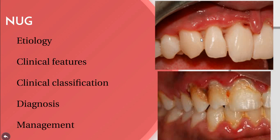The local predisposing factors that make the disease worse include poor oral hygiene, pre-existing marginal gingivitis, faulty dental restorations, and deep periodontal pockets, which offer a favorable environment for the disease. Areas of gingiva traumatized by opposing maloccluded teeth — especially in cases of deep bites — are also risk factors. Tobacco smoke has a direct toxic effect on the gingiva, and smoking and emotional stress can predispose to acute necrotizing ulcerative gingivitis.